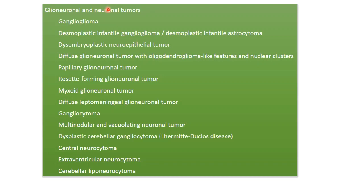Glioneuronal and neuronal tumors include ganglioglioma, desmoplastic infantile ganglioglioma, disembryoplastic neuroepithelial tumor (DNET), diffuse glioneuronal tumor with oligodendroglioma-like features and nuclear clusters, papillary glioneuronal tumor, rosette forming glioneuronal tumor, mixoid glioneuronal tumor, diffuse leptomeningeal glioneuronal tumor, gangliocytoma, multinodular and vacuolating neuronal tumor, central neurocytoma, and cerebellar liponeurocytomas.